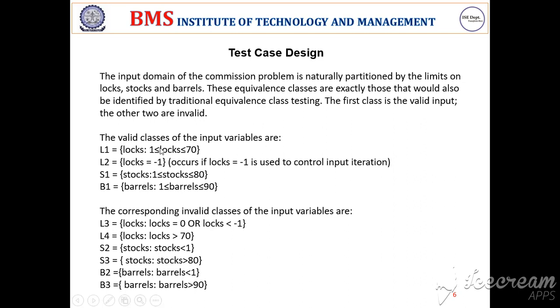For the valid class of inputs, locks should be in the range of 1 to 70. Locks equal to minus 1 is used to break out of the loop. Stocks should be in the range of 1 to 80, and barrels in the range of 1 to 90.